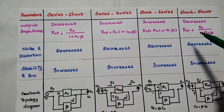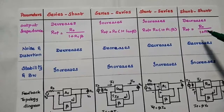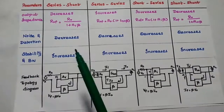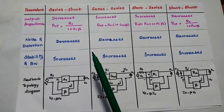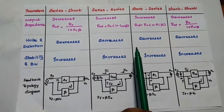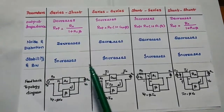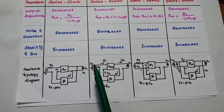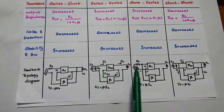It is very important — input and output impedances for each topology are very important. Due to negative feedback, we can decrease noise and distortion for all topologies, and both stability and bandwidth can be increased. Finally, the feedback topology diagram for each type is shown here.